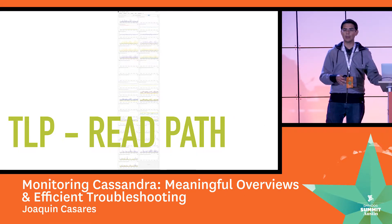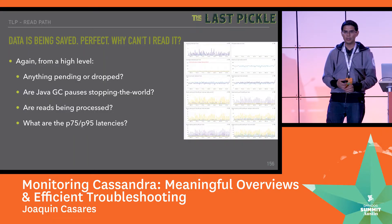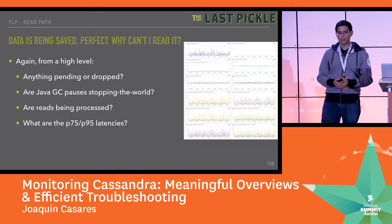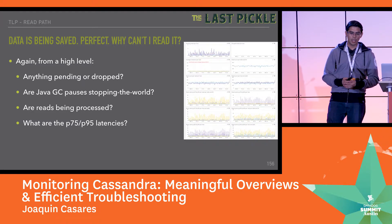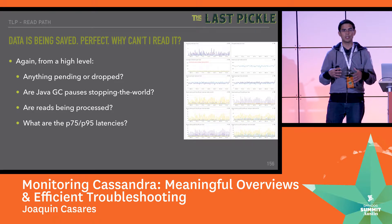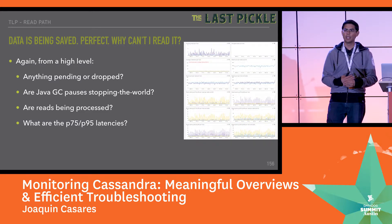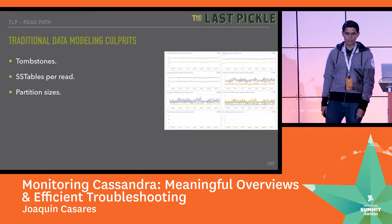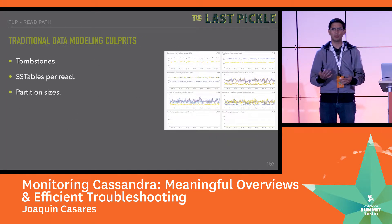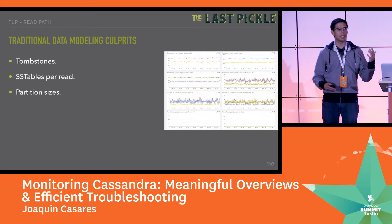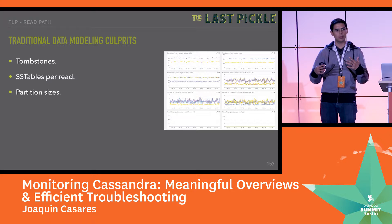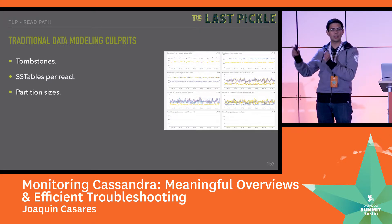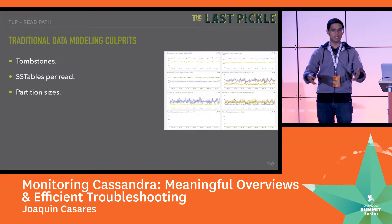If writes are fine but reads look a bit funny, we do pretty much the same thing: check if anything is pending or dropped, make sure Java GCs are fine, and make sure reads are still processing — again, only looking at P75 and P95s, or ideally P95 and P99, nothing less. Then we get into traditional culprits: tombstones and SSTables per read if your compaction strategy isn't set correctly. Issues there should bubble up so you know exactly what to investigate.